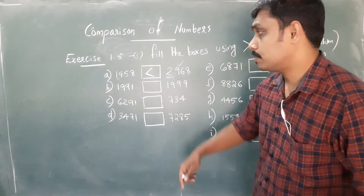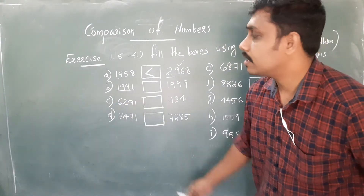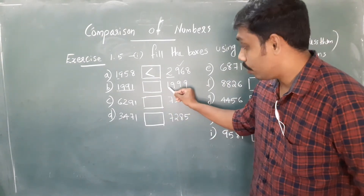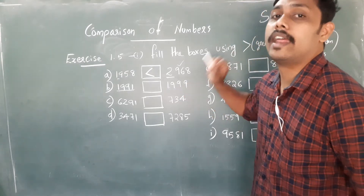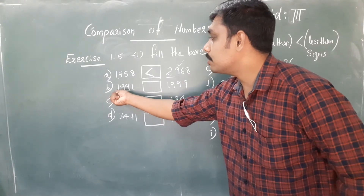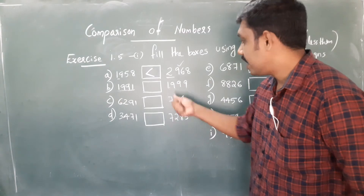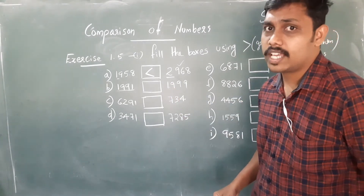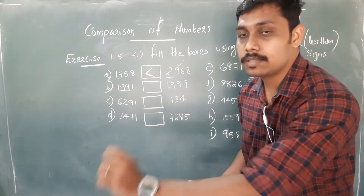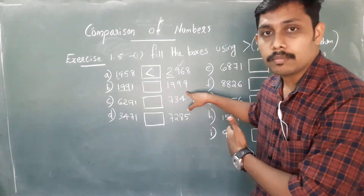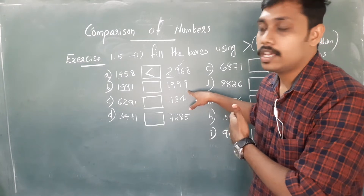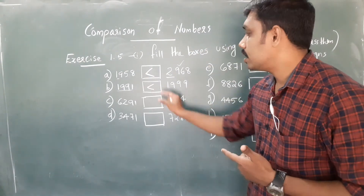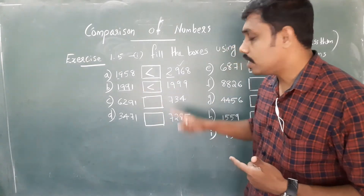Next problem. This is also a four-digit number. Read the number: 1991. And the next number: 1999. Here the first three digits are the same — 1, 9, 9. So we check the ones place: here the number is 1 and here is 9. So 1999 is the larger number. We indicate the symbol with the open mouth to the larger one.